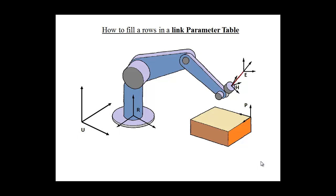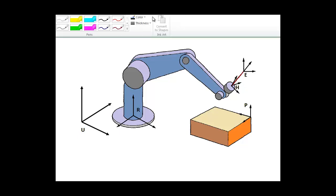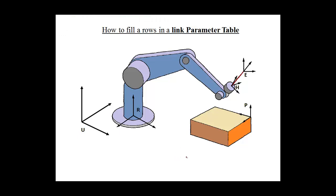Hello students. Many people might have a doubt about exactly how to fill the rows in a link parameter table. I have tried to simplify and show it with the help of animation in this video. We have a universal frame U, then a base frame R, then a hand frame H, and the end effector frame E. We have to find the transformation matrix that links the end effector to U, and we have to make the frames correctly to come up with this transformation matrix.